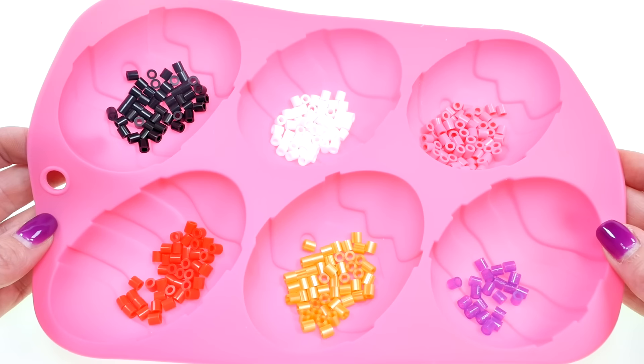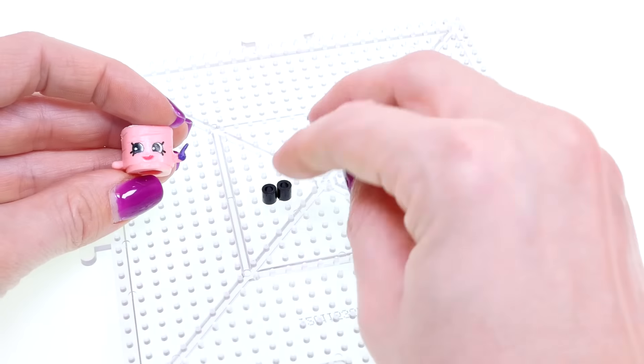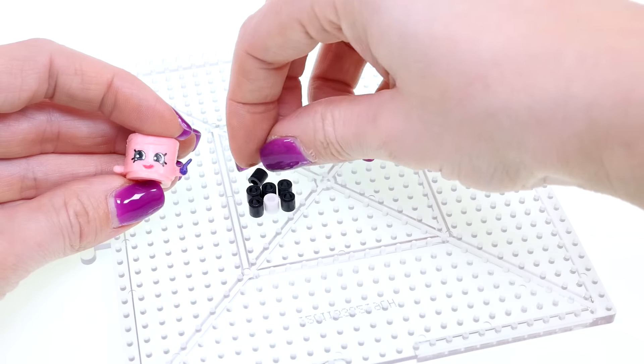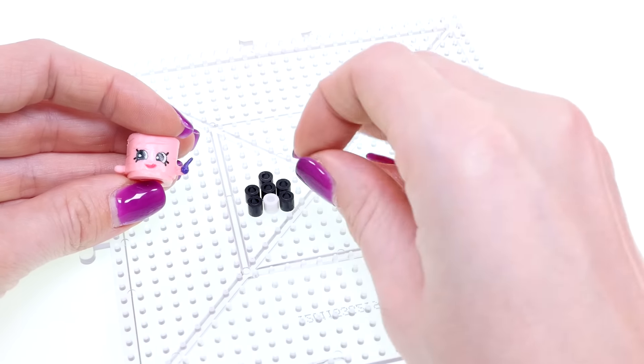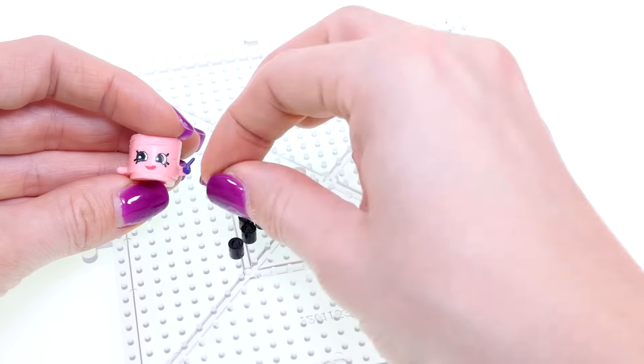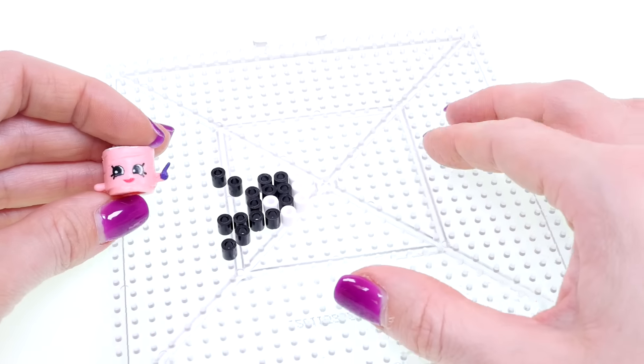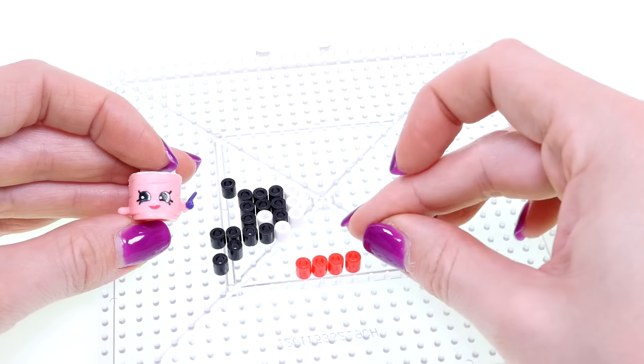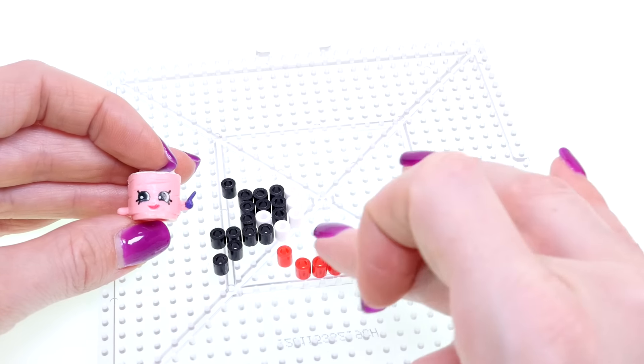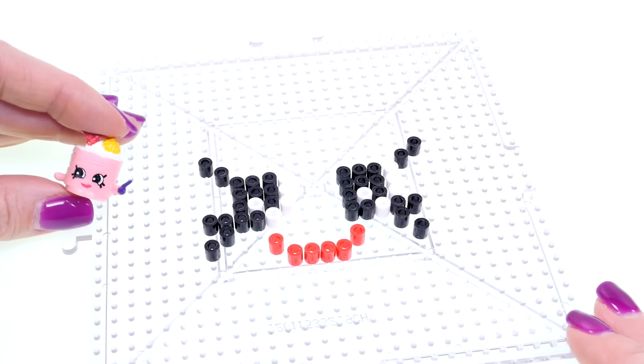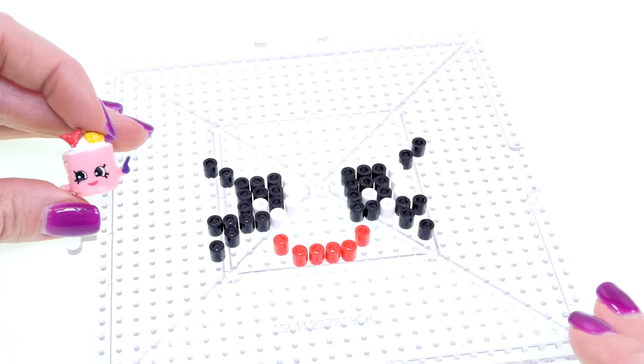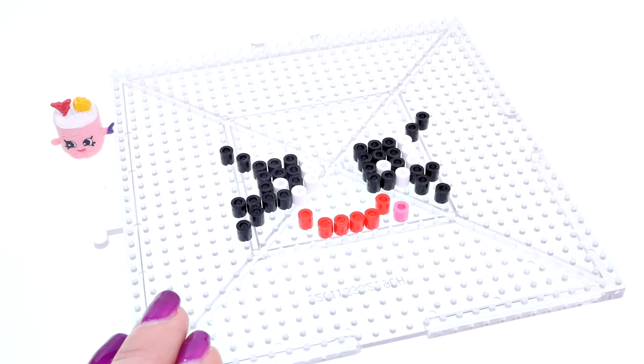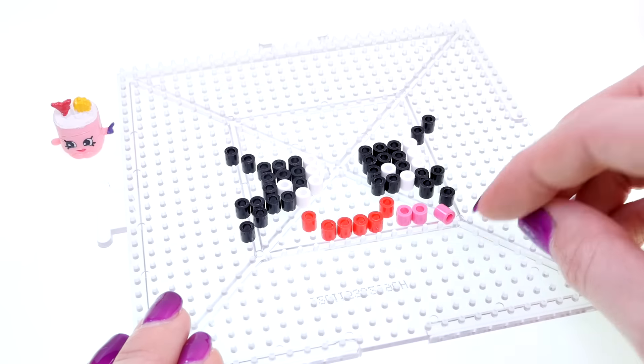I made another eye just like the left one because you can see that both of her eyes are looking to the left. Now I'm going to start filling it in pink.